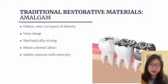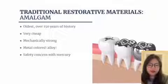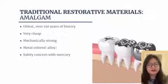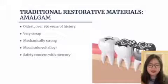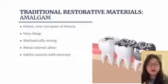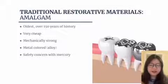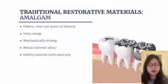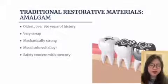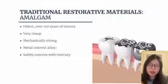Just to go into the brief history of different types of dental restorative materials — first, Amalgam. It is the oldest and has been used in the field for over 150 years. The good thing about it is that it's very cheap and mechanically very strong since it's just an alloy. However, it is metal colored, so not very aesthetic, and people have some safety concerns because mercury is contained in amalgam. There are some cases reported where patients have had allergic reactions to this material, so there are some debates today on its use.